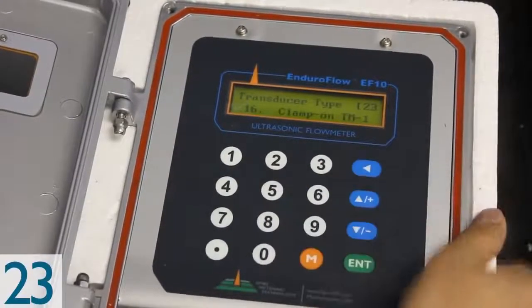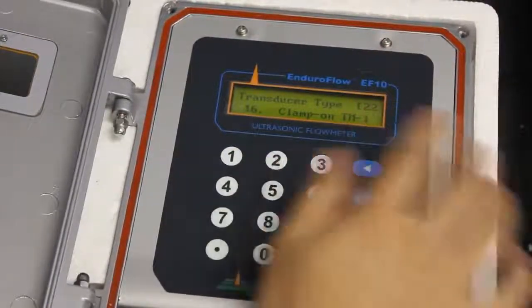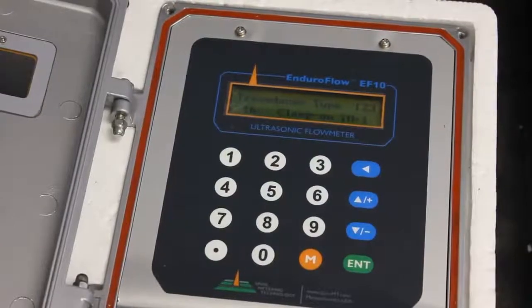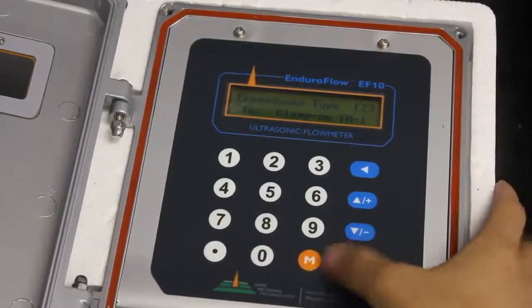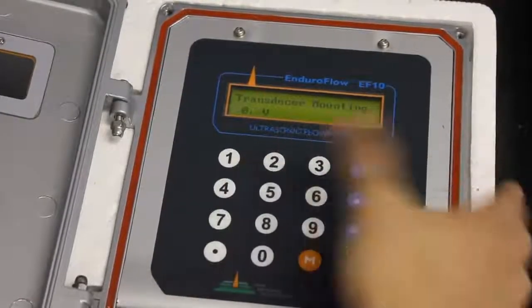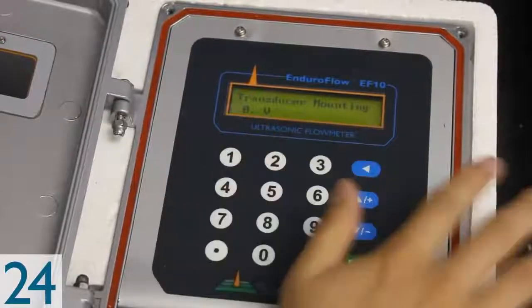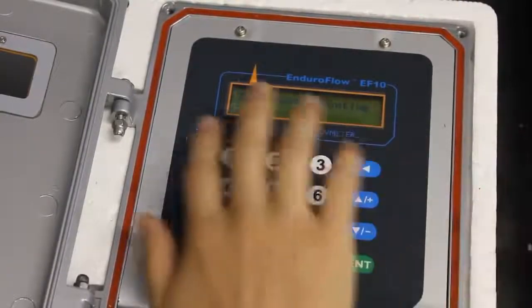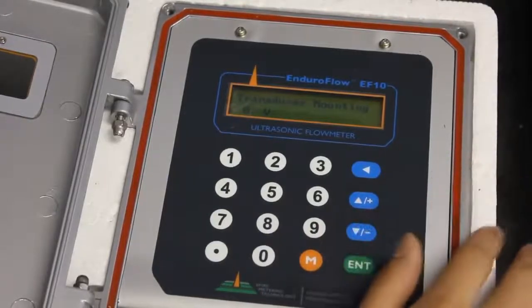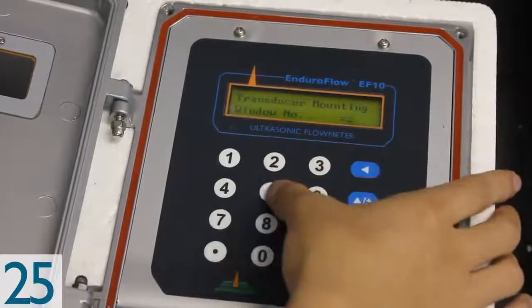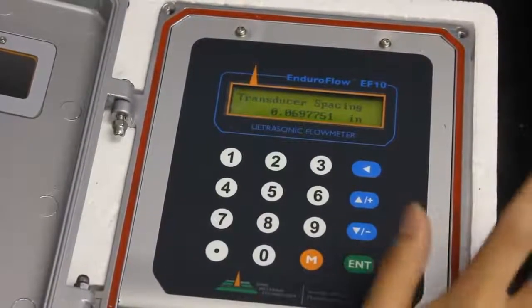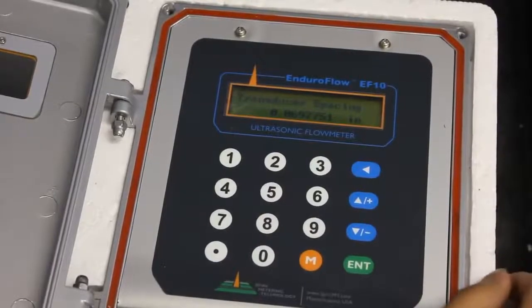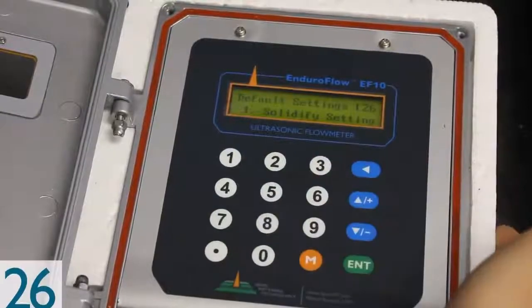Next we go to menu 23 to set your transducer type. We're going to be using the clamp on TM1s today. Right here. And then next you go to menu 24 to set your mounting method. Talk more about this later, but generally you would just use V method. You could also use Z method but that's for much bigger pipes, maybe if it had a 10 inch diameter or something like that. Then go to menu 25. This tells you how far apart your transducers are supposed to be. But a lot of times you end up having to adjust the transducers. We'll talk more about that later too.